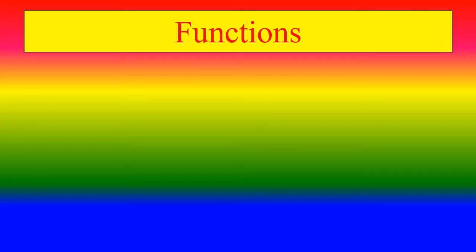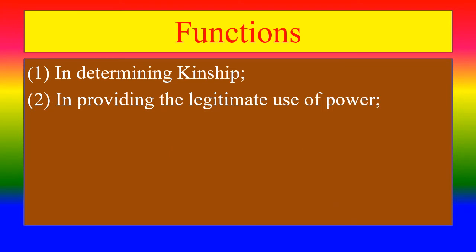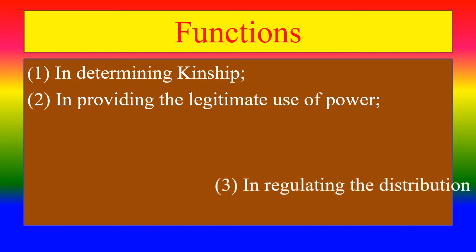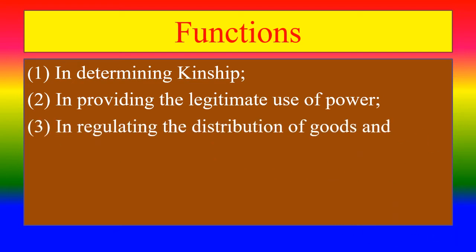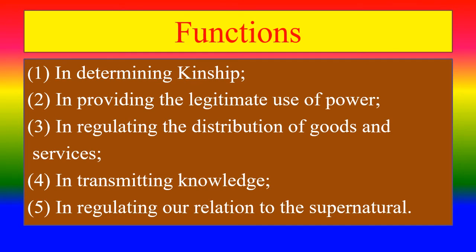Functions of social institutions: First, determining kinship by family. Second, providing the legitimate use of power by government. Third, regulating the distribution of goods and services — economic institutions. Fourth, transmitting knowledge — educational institutions. Fifth, regulating our relation to the supernatural — religious institutions.